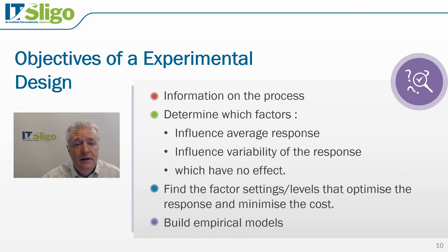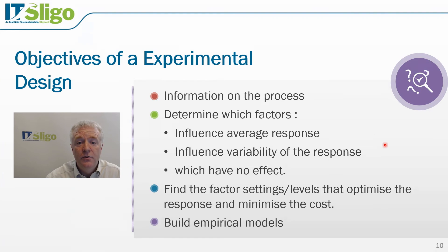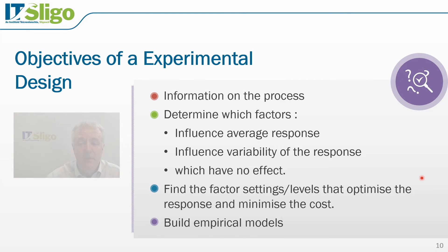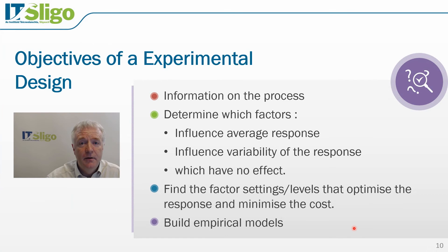The objectives of an experimental design are to obtain as much information as possible about the process. We want to understand the influence that the factors have on that process — which of those influence the average response or the location of the response, which affect the variability of the response, and which have absolutely no effect. We can then identify the factors and their levels or settings which optimize the response and minimize the cost. After achieving this, we will build an empirical model of our process — a mathematical model developed from experimentation which explains how that process operates.